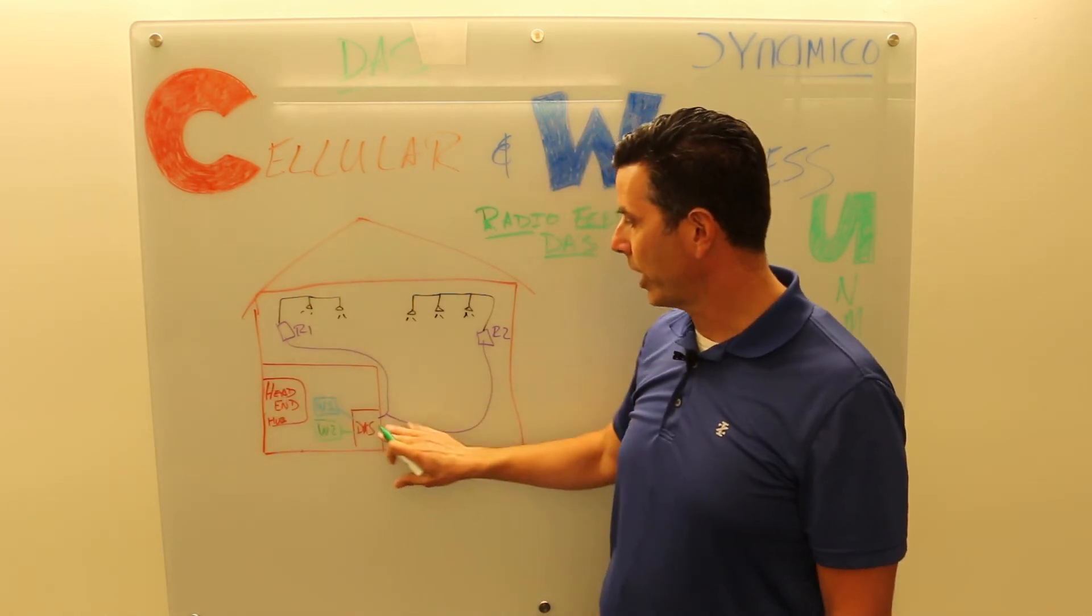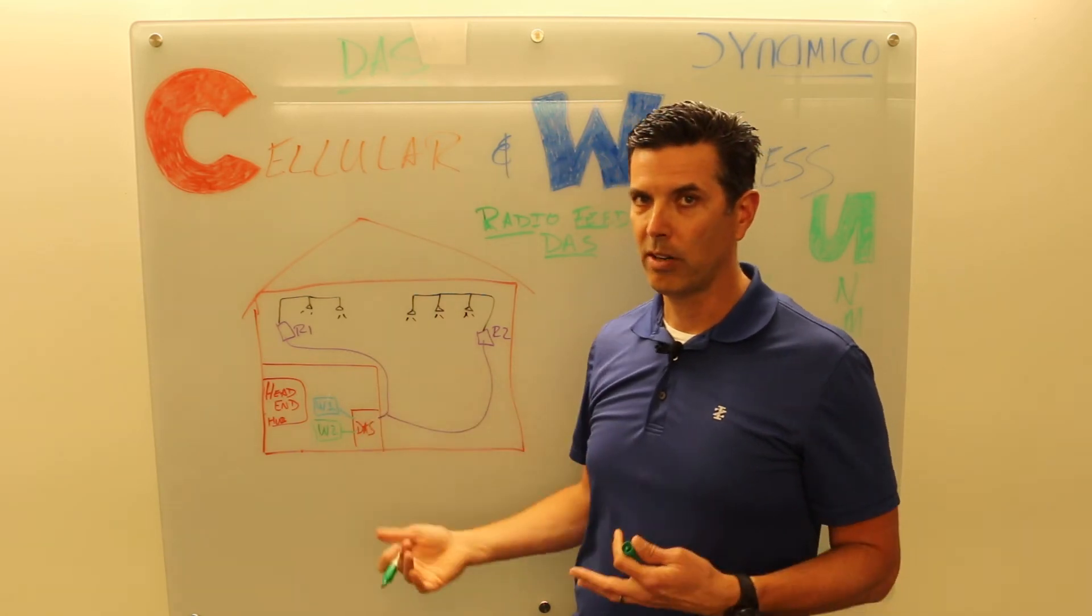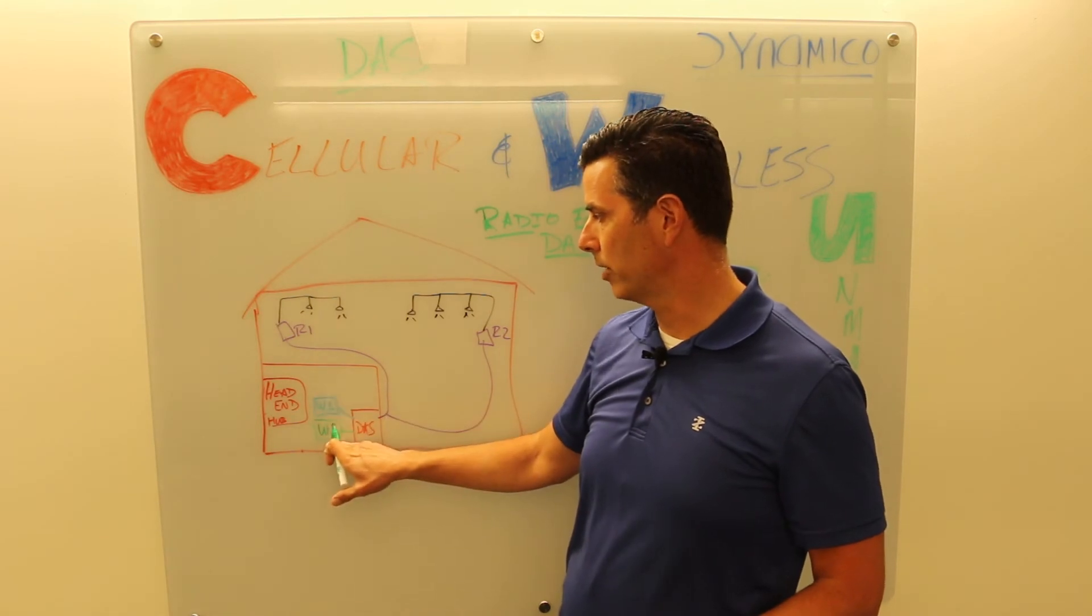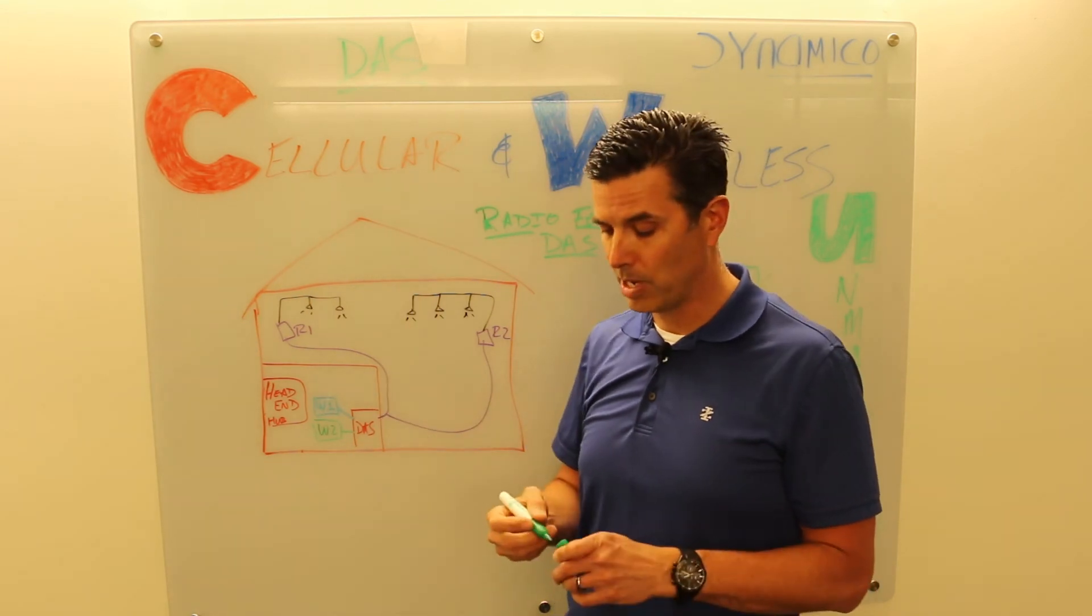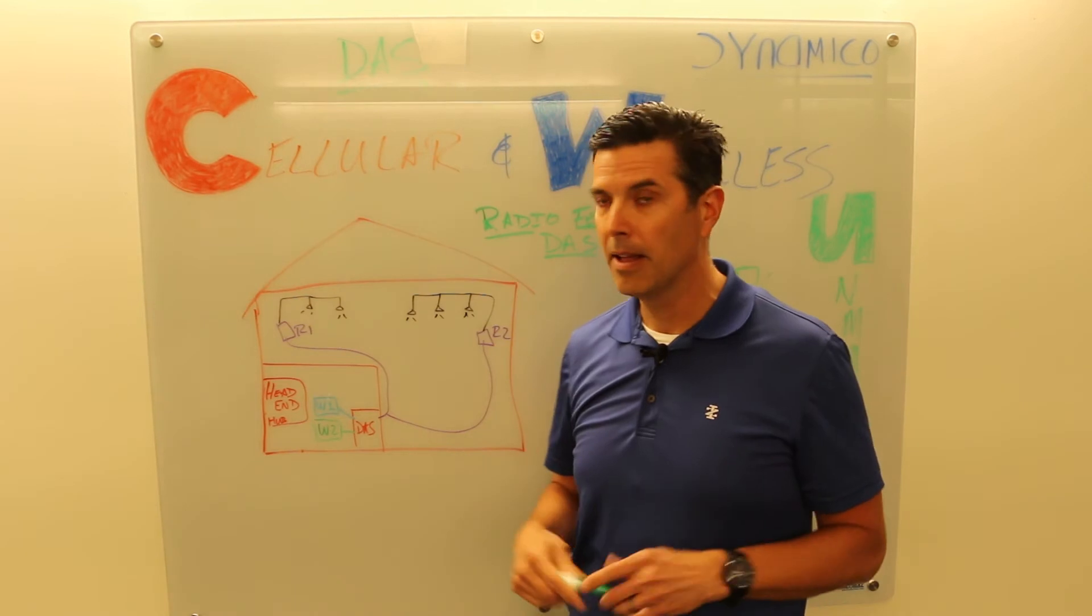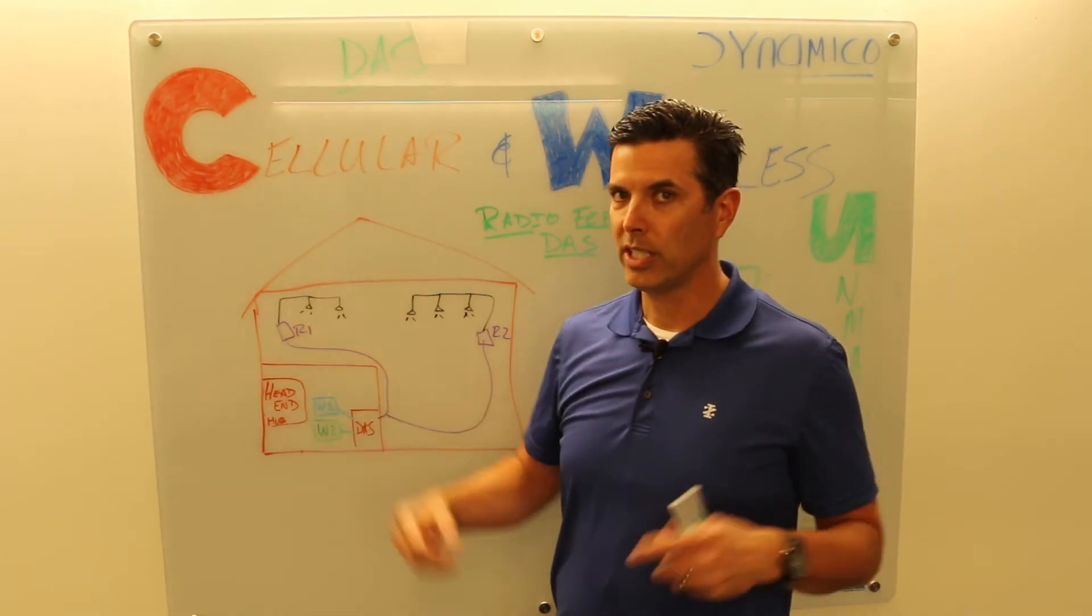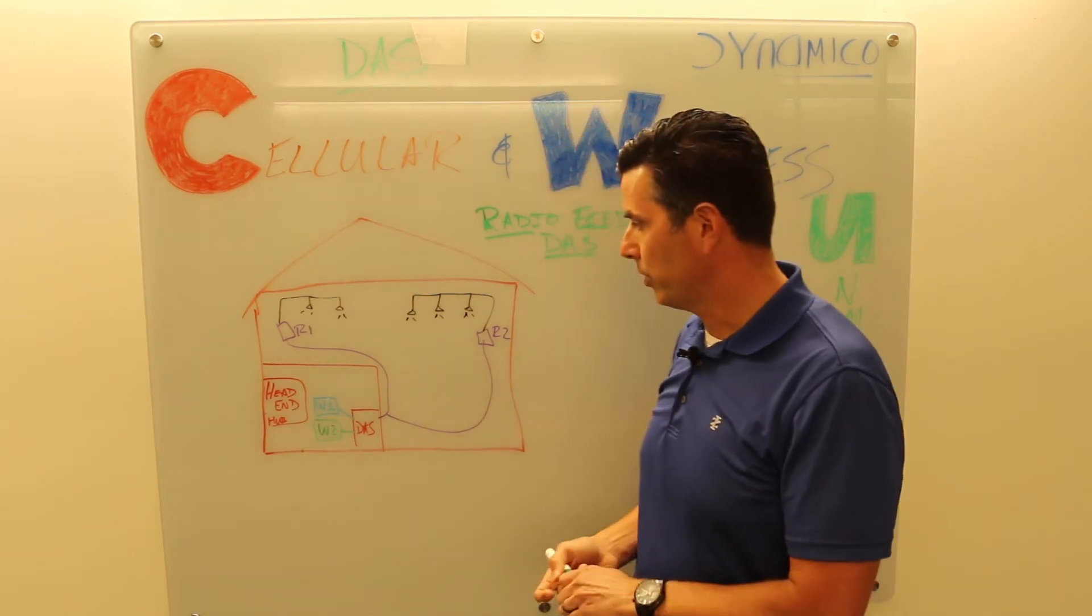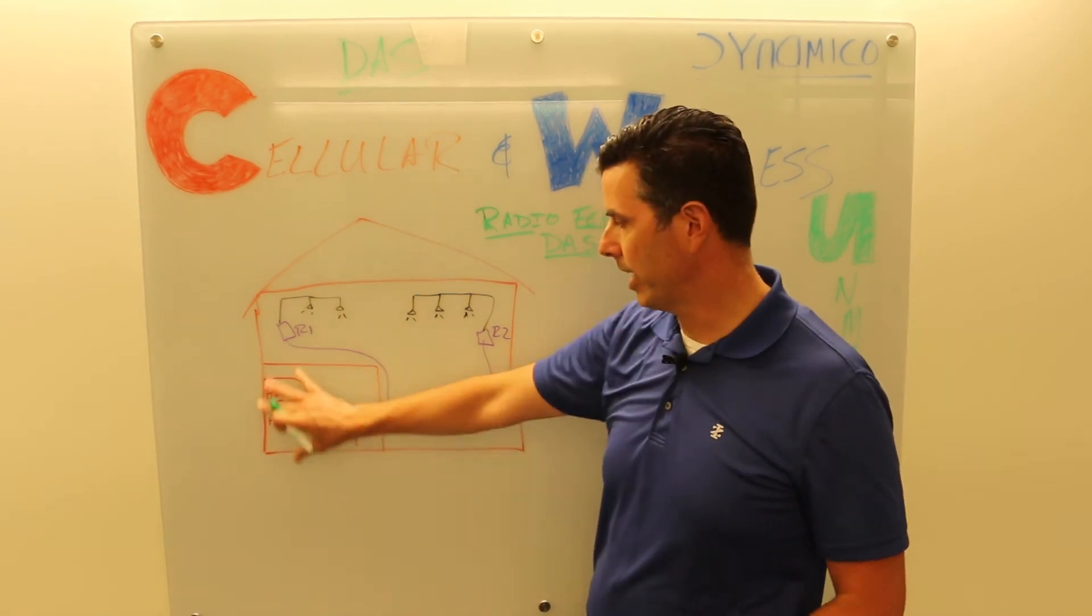You've got your DAS equipment. Now this is active equipment with points of interface that take the radio signals from wireless carrier one, wireless carrier two. It can be one frequency band, it can be two, it can be three, it can be four, it can be up to five different frequency bands into the same DAS. Each carrier can have multiple frequencies, or each carrier can just give you one radio with one frequency. What they do, those signals feed the DAS. And this is inside the head end or the hub.